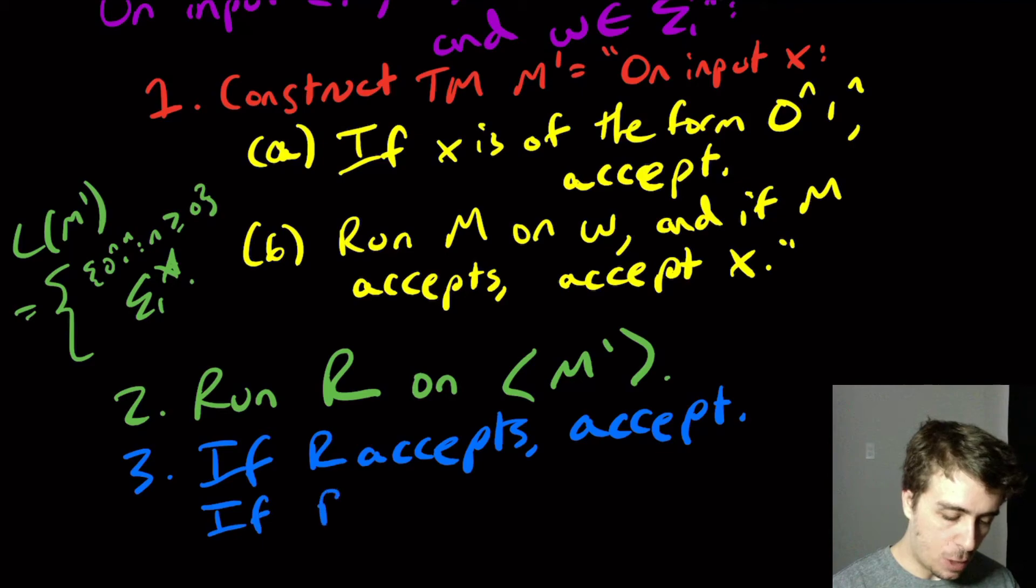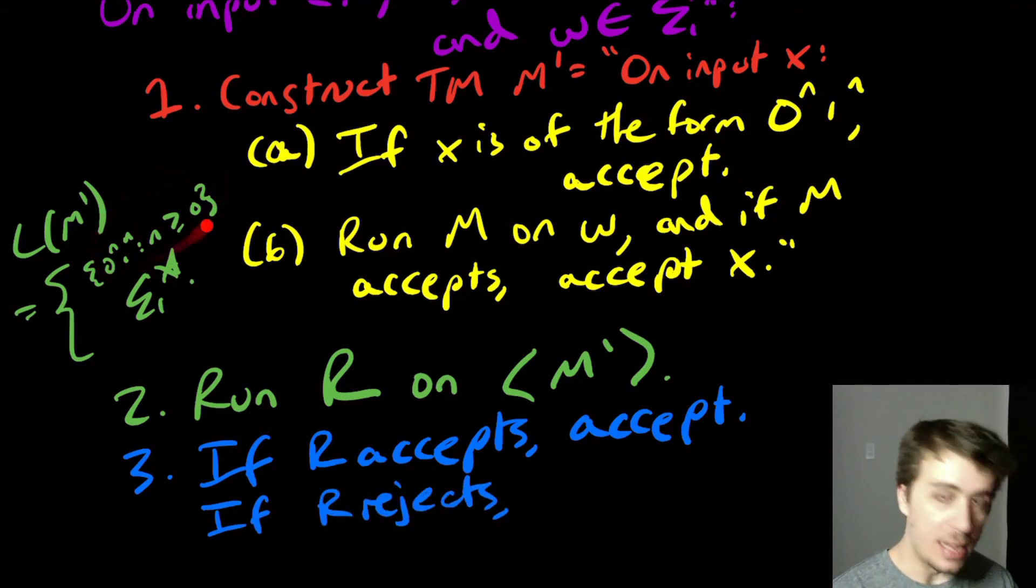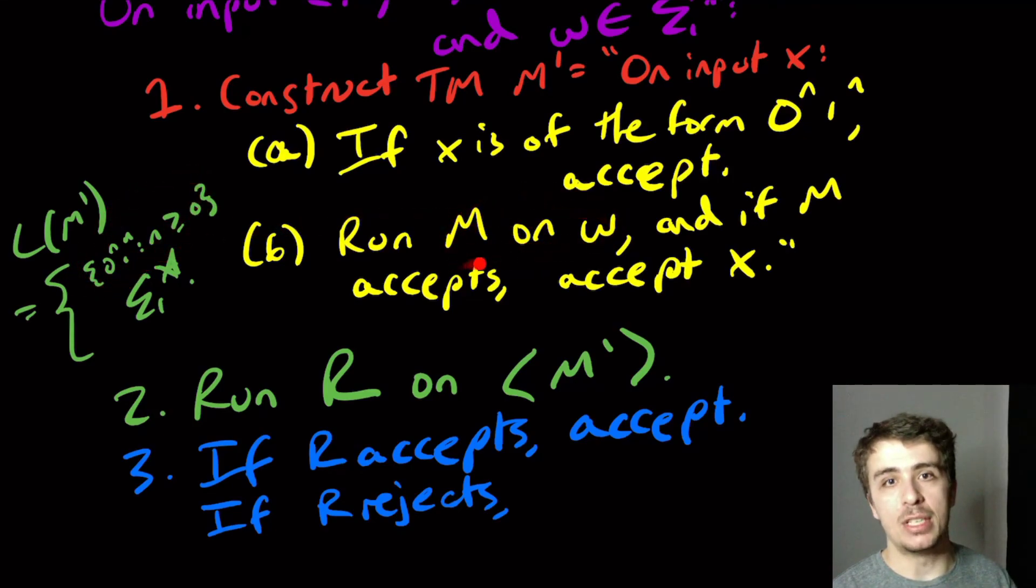And if R rejects, that means we are in this original case, which means this step of M on W did not succeed, which means M did not accept W by definition, and therefore we need to reject.